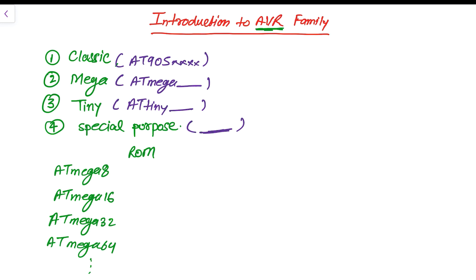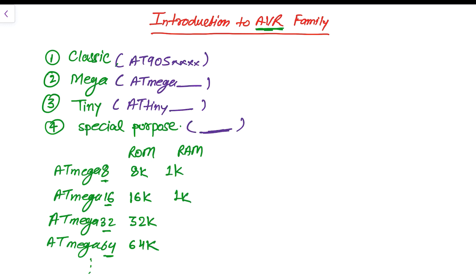Now let's see how much RAM is available on each ATmega microcontroller. ATmega 8 has 8K flash, ATmega 16 has 16K, ATmega 32 has 32K, and ATmega 64 has 64K flash — these numbers in the name represent the available ROM or flash memory. For RAM: ATmega 8 has 1KB, ATmega 16 has 1KB, ATmega 32 has 2KB, and ATmega 64 has 4KB.